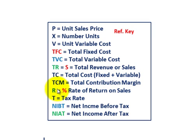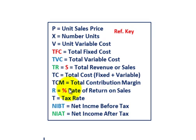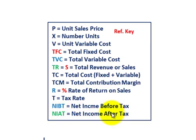R is going to be a percentage or rate of return on sales — that's the key item we'll be looking at when solving for our break-even quantities. T equals our tax rate. NIBT is net income before taxes, and NIAT is net income after taxes.